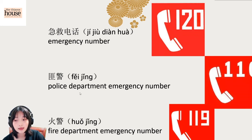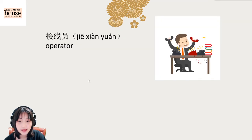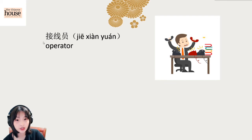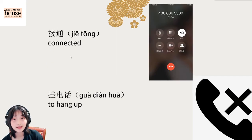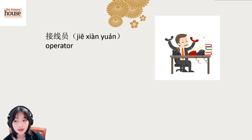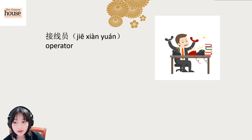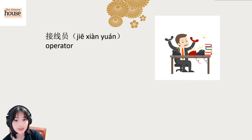So this is the difference. And 火警 — fire emergency. And then operator: 接線源, 接線源. 接 means to connect — we have learned 接通, which means connected, 通 means through. And here 接線 — 線 means line, so the line between telephones. 接線源 means person, so operator: 接線源.